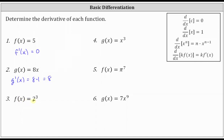Next, we have f of x equals two cubed. We need to be careful here. We do not apply the Power Rule of Differentiation because this is not x to the third power. This is just two raised to the third power, which is equal to two times two times two, which is equal to eight. Therefore, f of x is just a constant function, and therefore f prime of x is equal to zero.